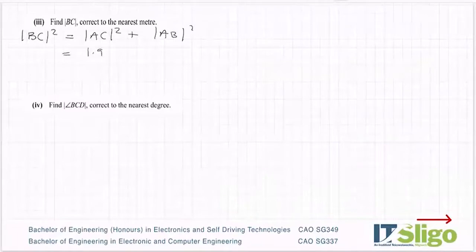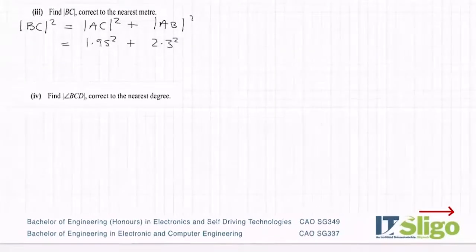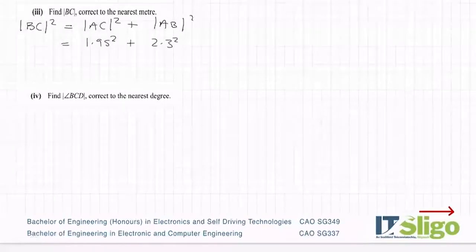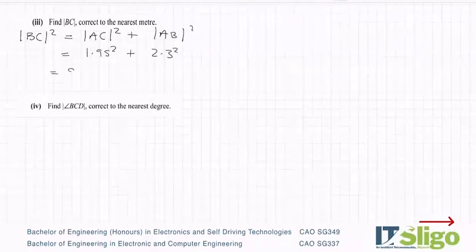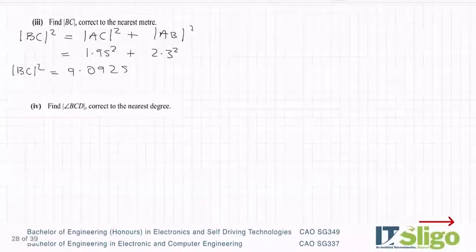So it's 1.95 squared was one of them, 2.3 squared was the other one. Let's try that into the calculator. So I'm getting BC squared is equal to 9.0925. Let's square root that, let's go square root answer. And I've got 3.01. Did I have to show it was equal to anything? No, I had to find it to the nearest meter. So to the nearest meter, that's equal to three meters.